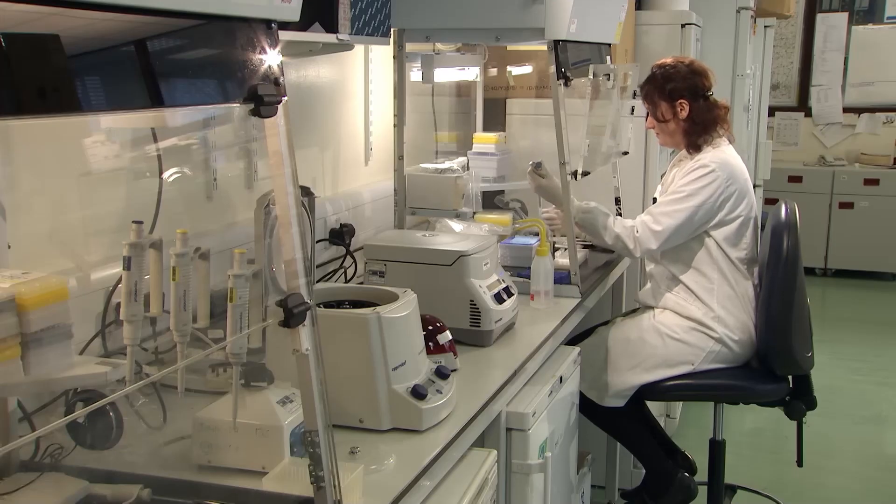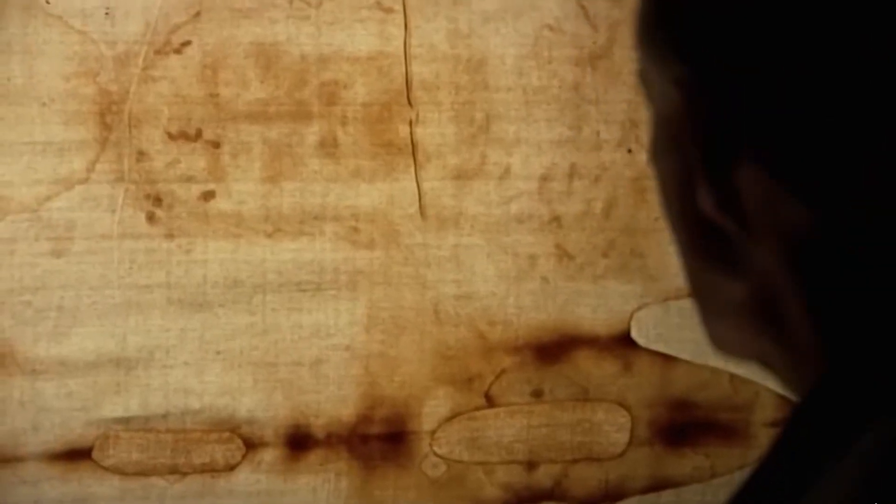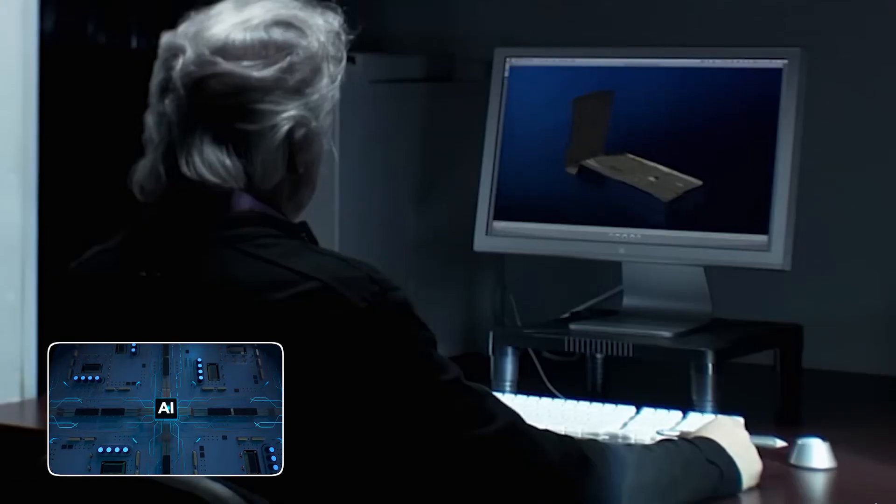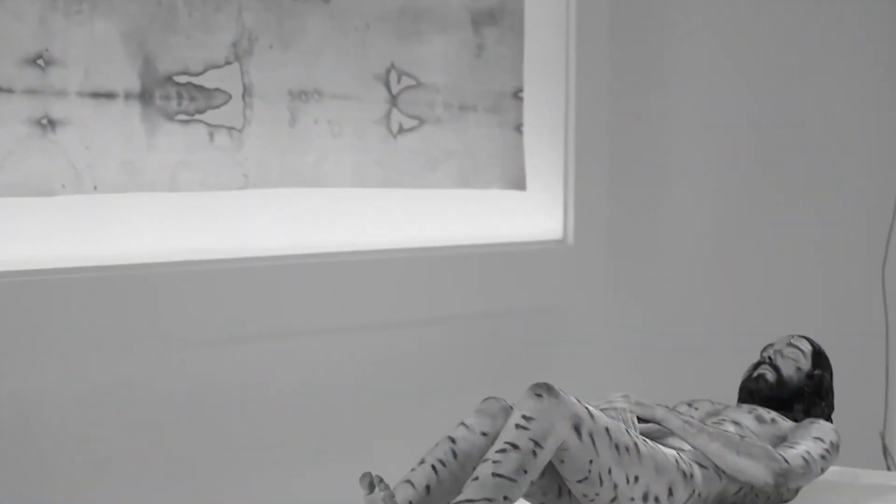The AI's final analysis focused on the bloodstains. The shroud is covered in what appears to be real, type AB human blood. This has been tested and confirmed. But the AI found something else. It found that the bloodstains were on the cloth before the image-forming event. The energy burst that created the image of the man did not create the bloodstains. In fact, the AI showed that the image is missing under the bloodstains. This means the cloth was wrapped around a bleeding body, and then the impossible energy event happened, photographing the body onto the cloth around the blood.